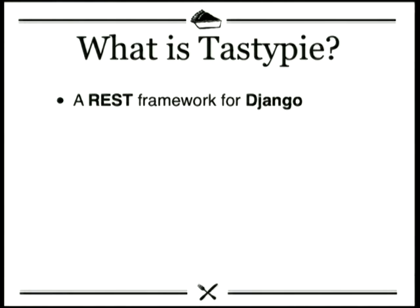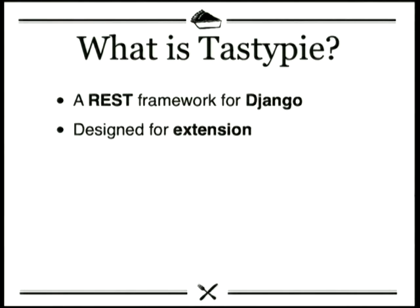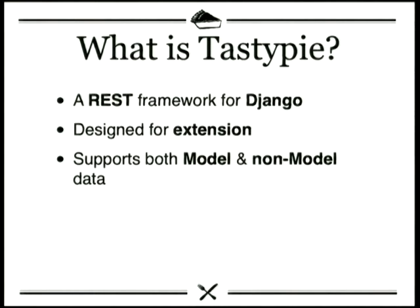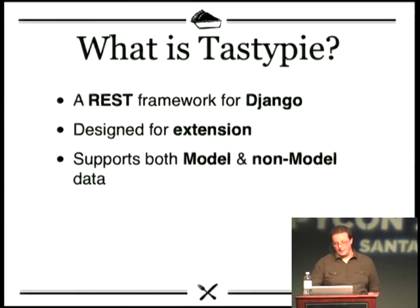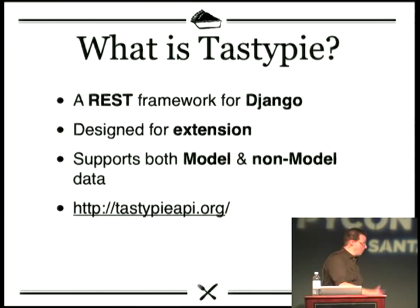What is TastyPie? TastyPie is a REST framework for Django. What that means is it cooperates with the RESTful ideals described in some of the RFCs. It provides a web-based API on top of Django. One of the differences people find when using TastyPie versus other API frameworks is this concept of being designed for extension — designed with you in mind, not just me. It supports both the ORM that comes with Django as well as non-model data, so you can represent all kinds of data: not just things coming out of Postgres or MySQL, but things like NoSQL, log-based stores, RPC, and more. You can find more details at TastyPieAPI.org.